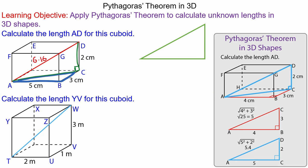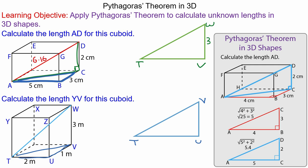Moving on to length Y to V, we can break it down to another right angle triangle where the vertices are T, B, and W. We can work out the length T to V using another right angle triangle with vertices T, U, and V. We know T to U is 2 and U to V is 1, so T to V would be the square root of 2 squared plus 1 squared, which is the square root of 5.